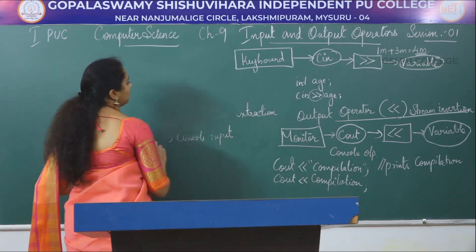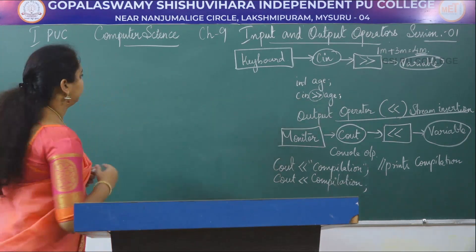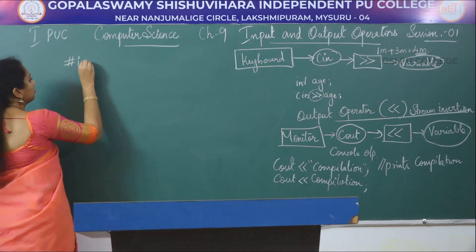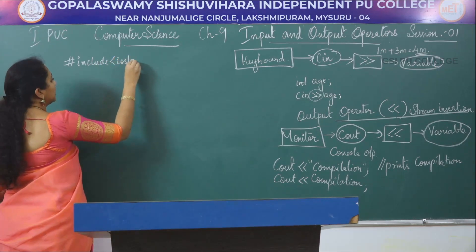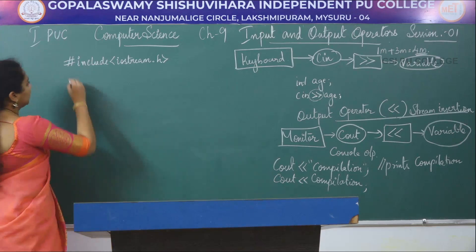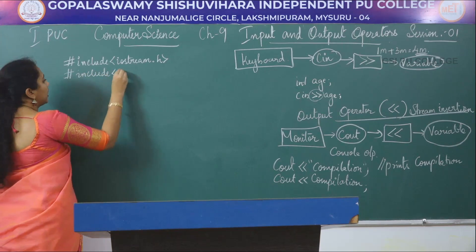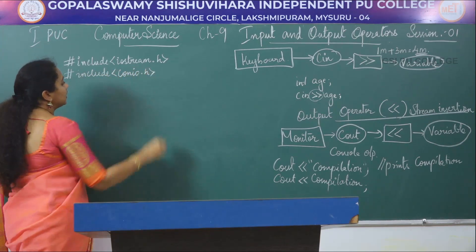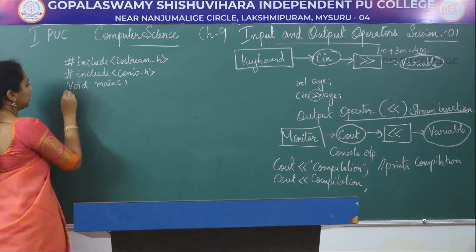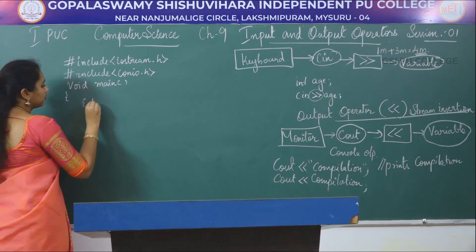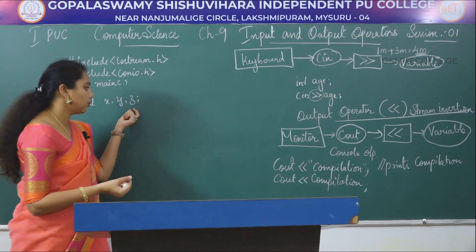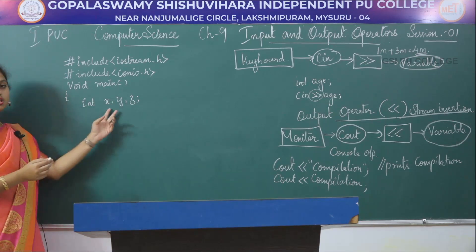Now let's see how to write a C++ program to add two numbers. First, include the required header files: #include <iostream.h>, which provides basic services and supports cin and cout, and #include <conio.h>, which contains functions for clrscr and getch. In the main function, declare the required variables: int x, y, z — two variables to hold inputs and one to store the sum.